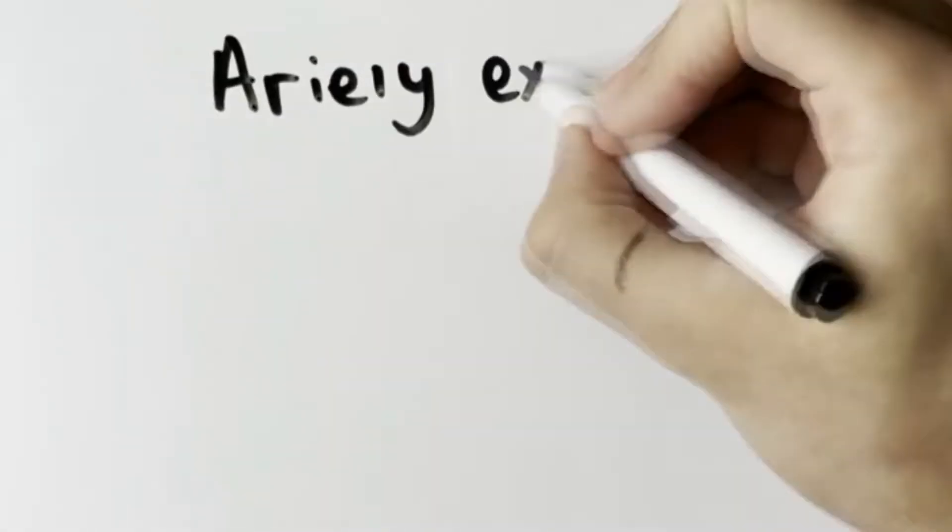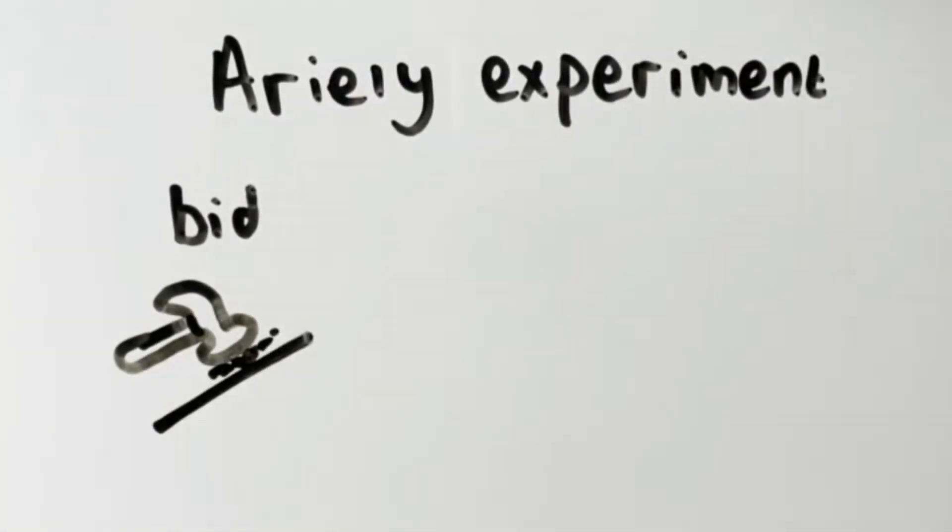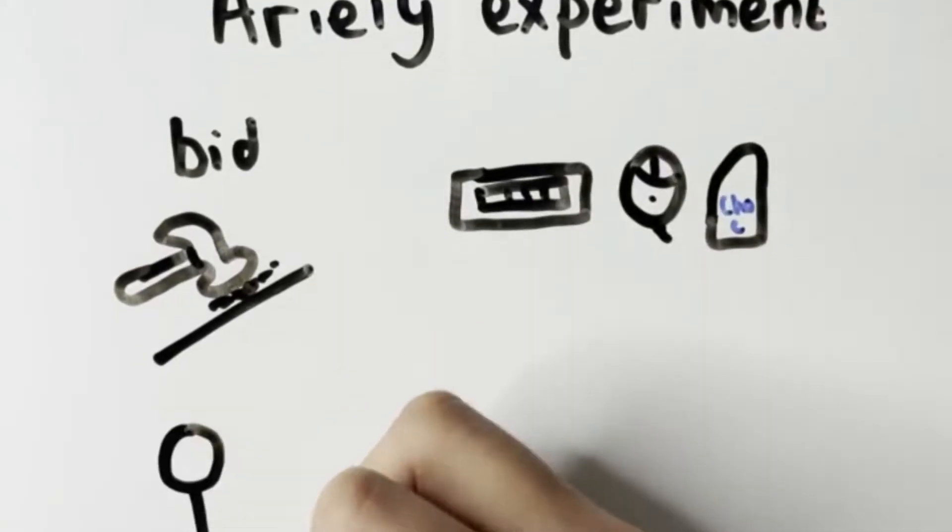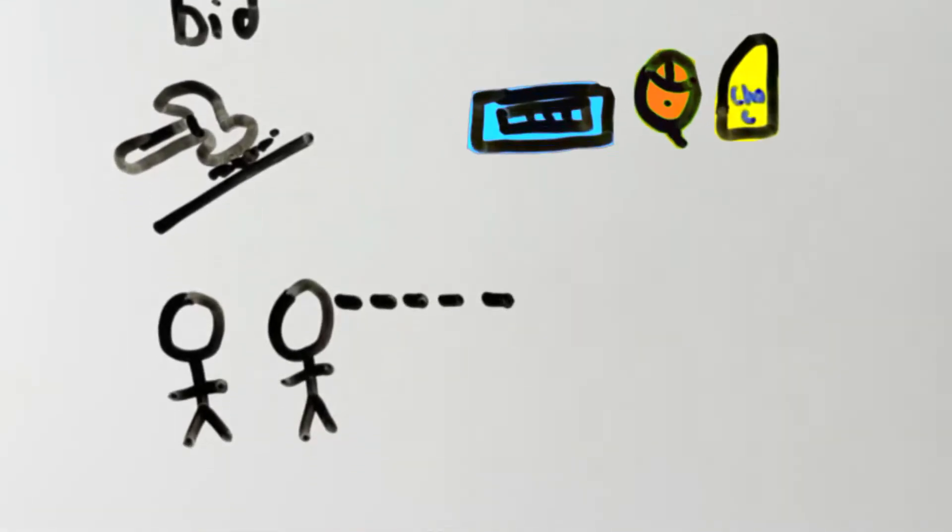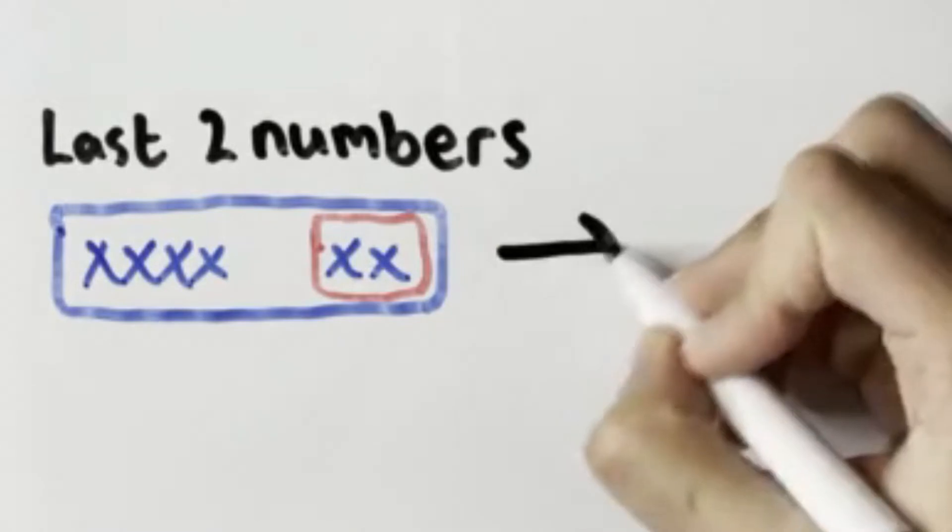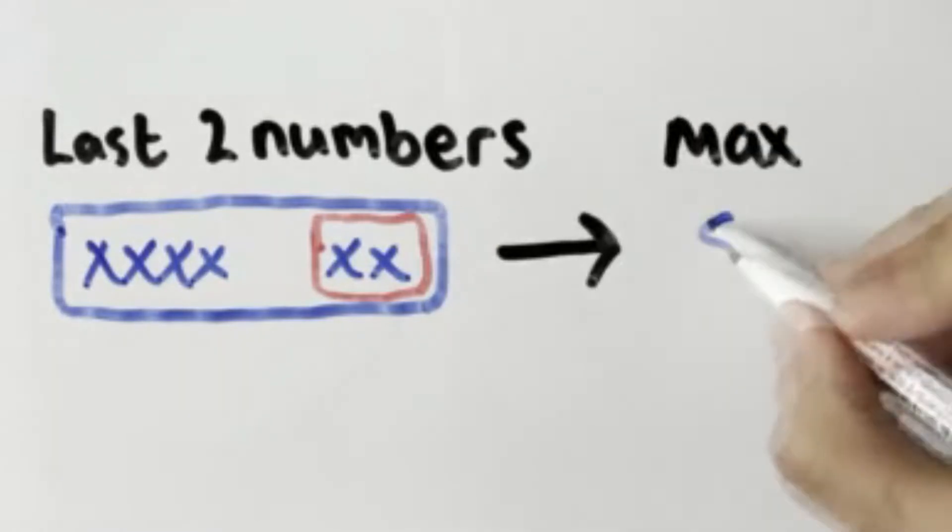To test this effect in real life, Dan Ariely conducted an experiment where he asked students to bid on random products, such as computer accessories and luxury chocolates. He briefly showed them all the products before they began bidding. They were then asked to write down the last two numbers of their social security number and then state the maximum amount they'd be willing to pay for each of the products.